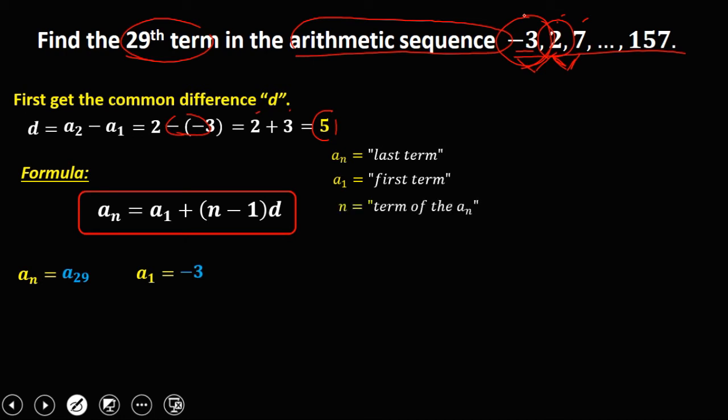Now, since our a sub n is a sub 29, therefore n is equal to 29. Then d, the common difference, is positive 5. Then substitute these values to this formula.